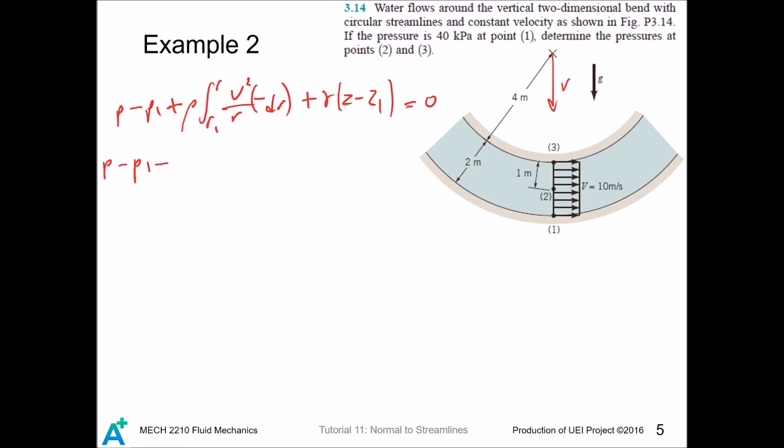Equals zero. We have a constant, so we pull it out and integrate to find that is natural log r divided by r1 plus gamma times h, where h is the elevation from z1.